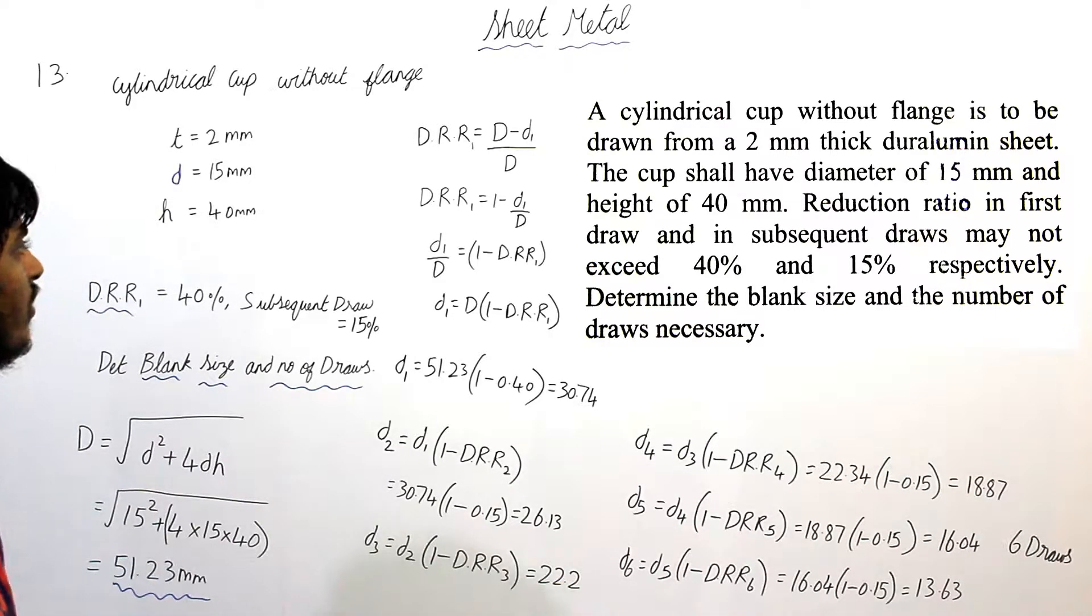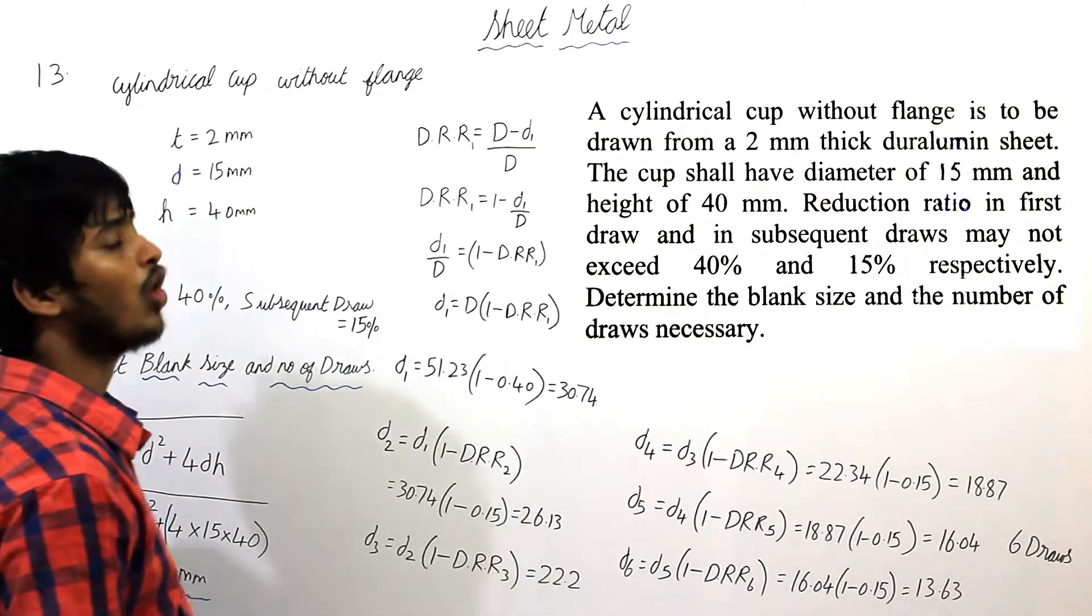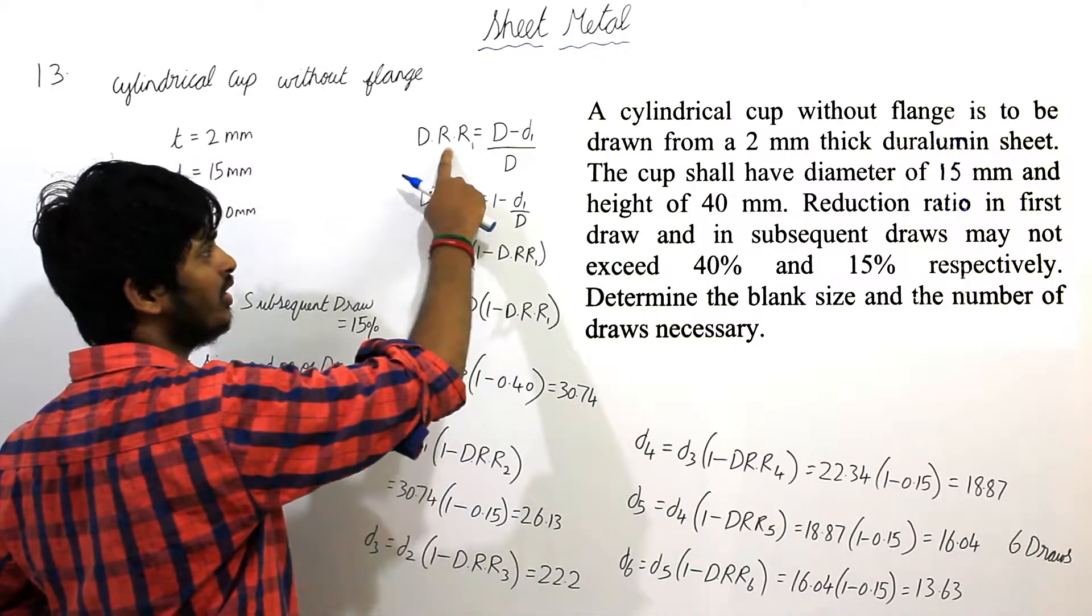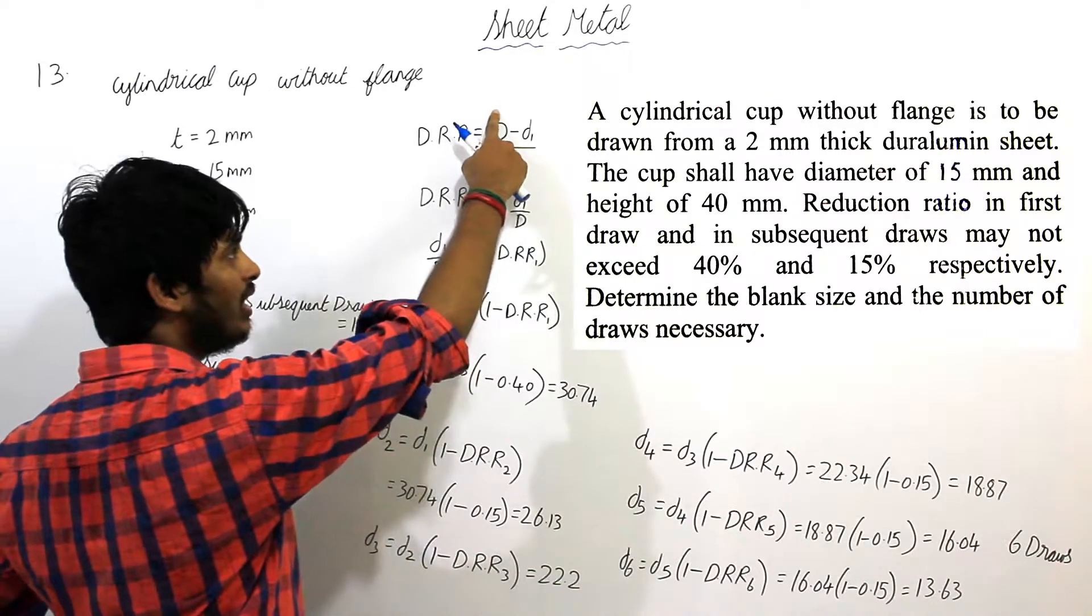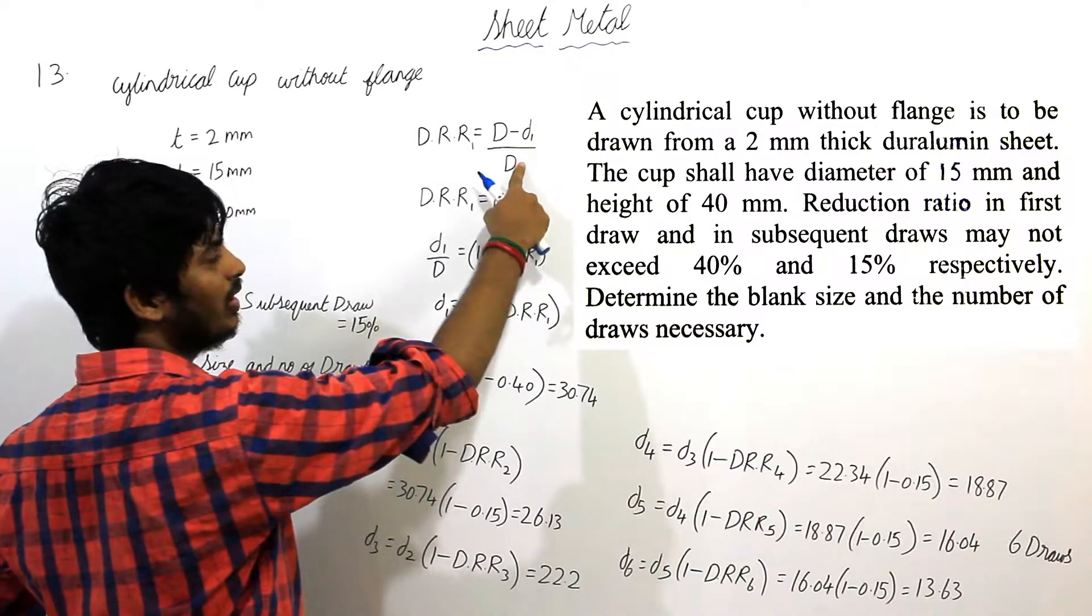After finding all this, we can easily find the draw reduction ratio method. Draw reduction ratio for first draw, it is given as capital D minus small d1 by capital D.